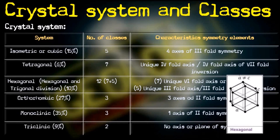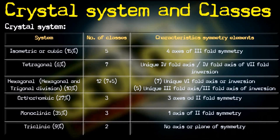The hexagonal division has a unique sixfold axis of inversion, while the other class — the trigonal division — has a unique threefold axis.